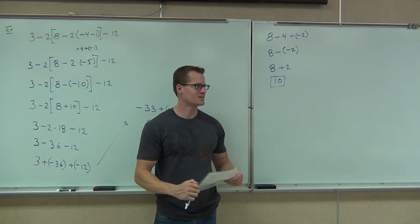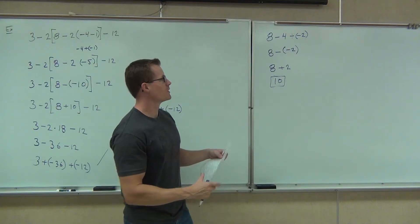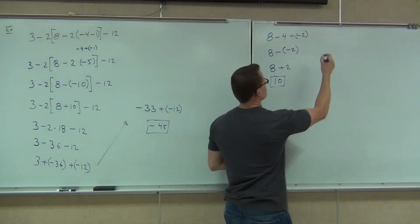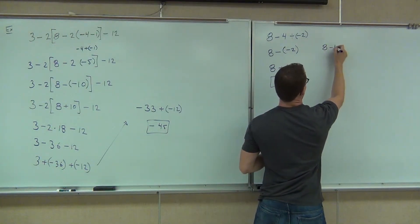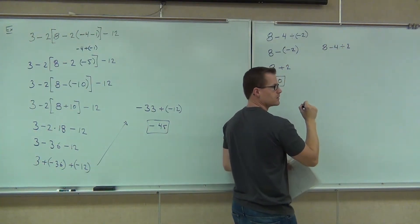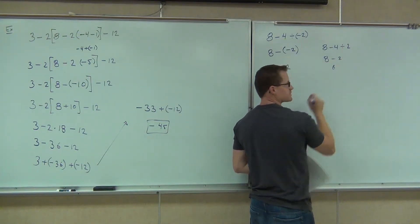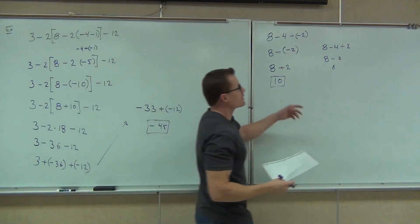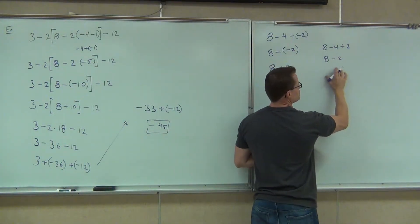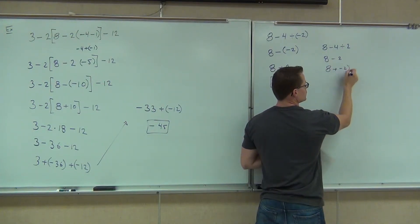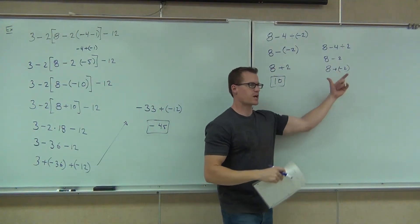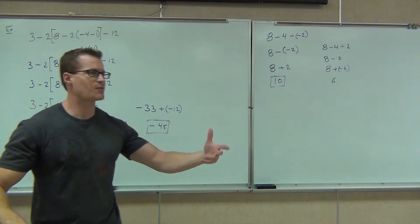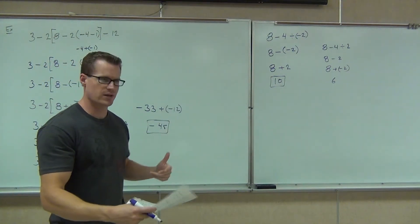What would we have to do if negative 2 was a positive 2? You'd have 8 minus 2 — you get 6. Could you also change it to plus negative? Yeah, you could do plus negative — different signs, subtract, keep the sign of the bigger number, it's still 6. So those rules work all the time, as long as you change it to a plus. That's why we're changing minuses to pluses — to make sure that happens.